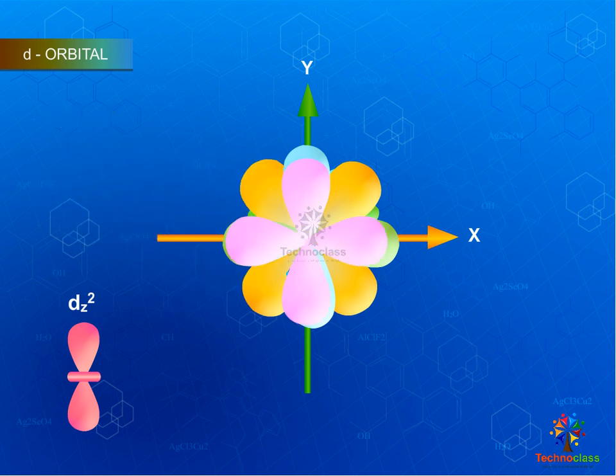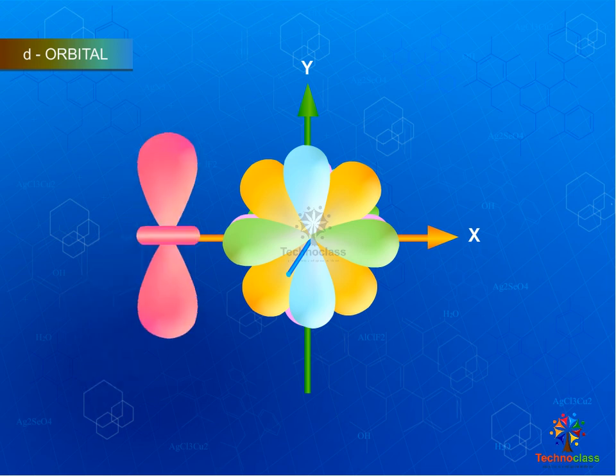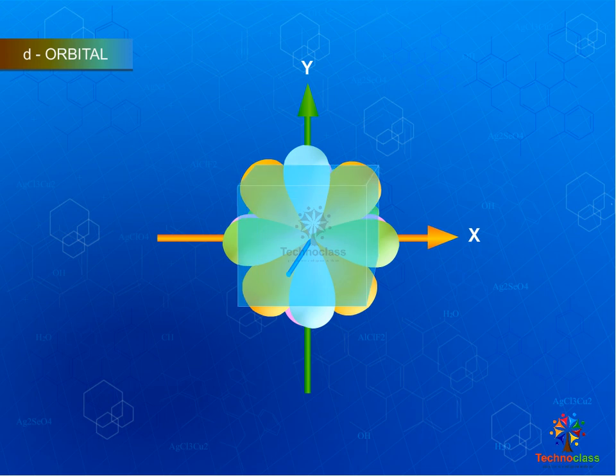D x-squared minus y-squared orbital is also clover leaf shaped, directed along the X and Y axis. D z-squared orbital is dumbbell shaped with donut shaped electron cloud in the center. Four lobes of D Orbitals are separated by two nodes.